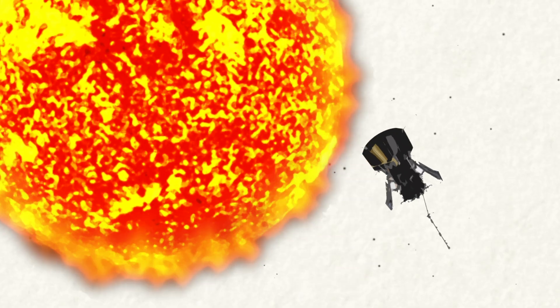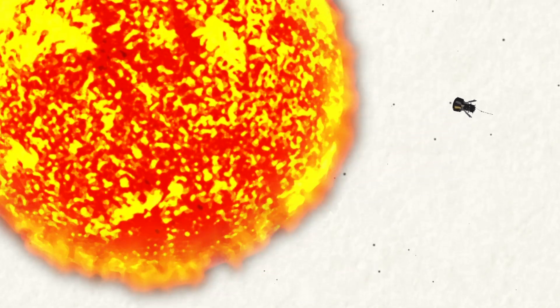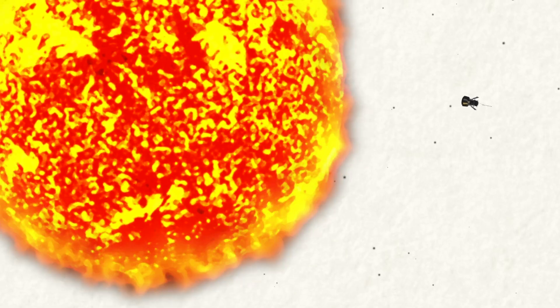NASA's Parker Solar Probe will soon fly closer to the Sun than any spacecraft before it, about 4 million miles from the visible surface. But getting that close to the Sun requires some fancy orbital mechanics.